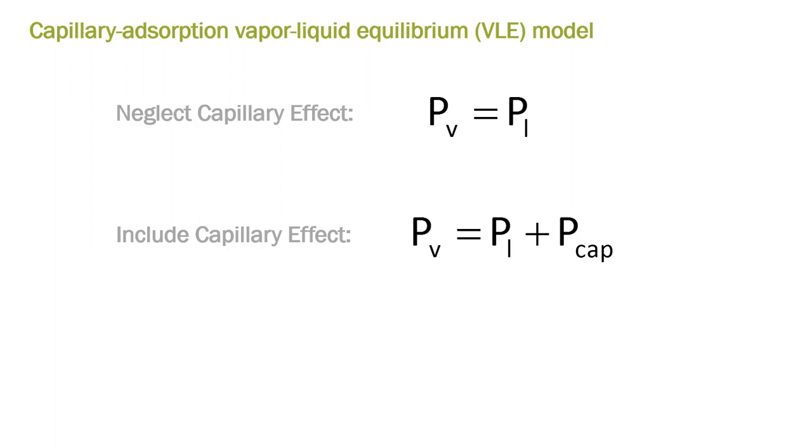The fugacity of the vapor is equal to fugacity at the pressure of the vapor. If you assume these are the same, you only care about one pressure. But if you want to consider the capillary pressure effects, then PL and PV are not the same. There is a capillary pressure difference that affects this.